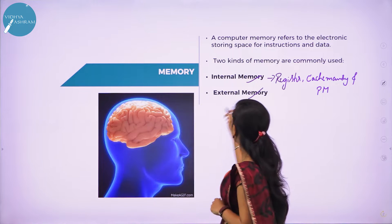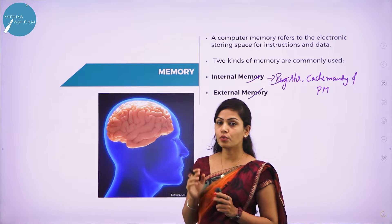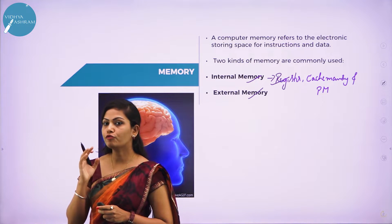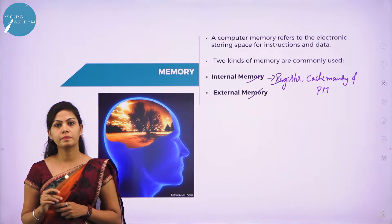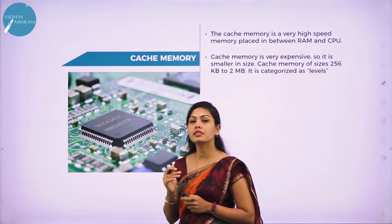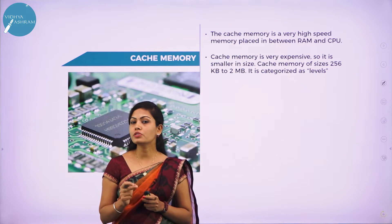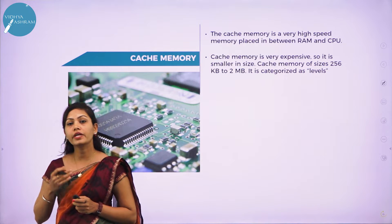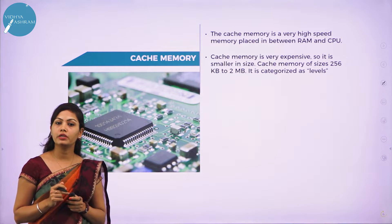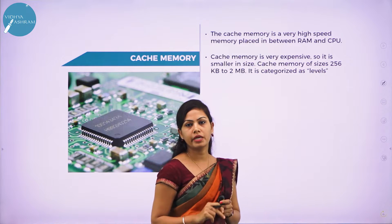Registers are high speed storage units within the CPU. A register is a temporary storage area for holding data and instructions. Cache memory is a high speed semiconductor memory which can speed up the CPU. Cache memory is used to reduce the average memory access time, and it is faster than main memory. It stores programs that can be executed within a short period of time.